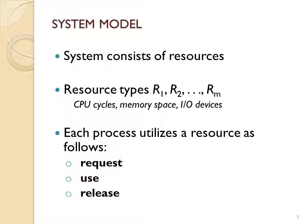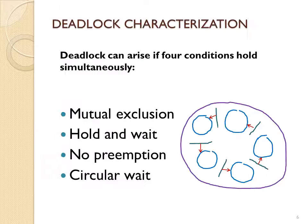In a system, you have a bunch of resources that processes share. The processes are going to request the resources, use the resources, and release the resources. To make a request you could use a semaphore, hardware support, a lock, a mutex, or a monitor. The process then uses the resource while blocking all other processes, and then releases it. In such a system you can end up with a deadlock when two or more processes end up waiting on each other.